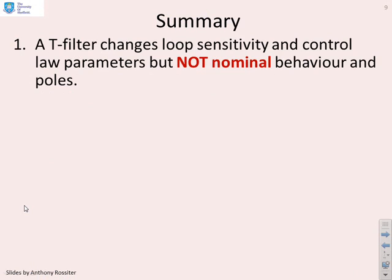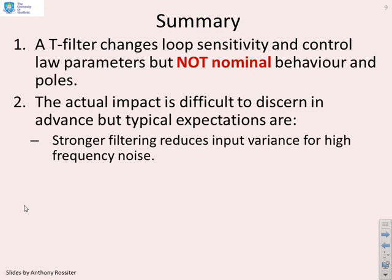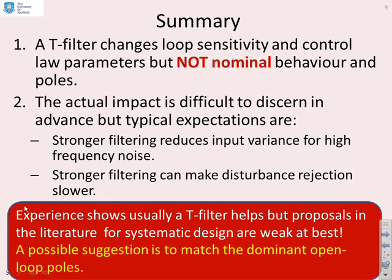In summary, a T-filter changes the loop sensitivity and the controller parameters, but not the nominal behaviour or nominal poles. The actual impact is difficult to discern in advance, but typically stronger filtering reduces the input variance for high-frequency noise, while stronger filtering can also make disturbance rejection slower. Experience usually shows that a T-filter helps — most people say if you're using a CARIMA model you'll need a T-filter, otherwise noise rejection is not good enough. Proposals in the literature for systematic design are relatively weak, and a typical suggestion is to choose the filter poles to match the dominant open-loop poles, which gives sensitivity roughly equivalent to DMC based on step response models.